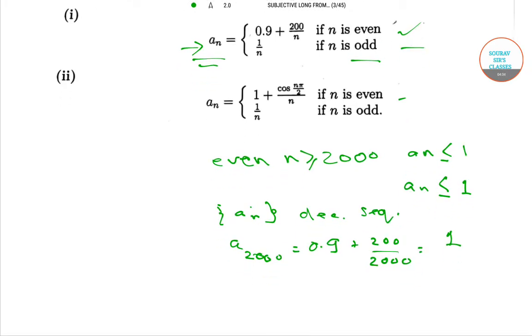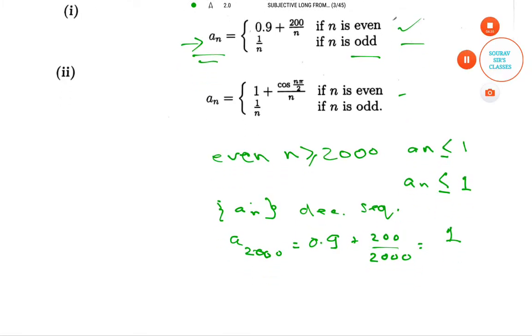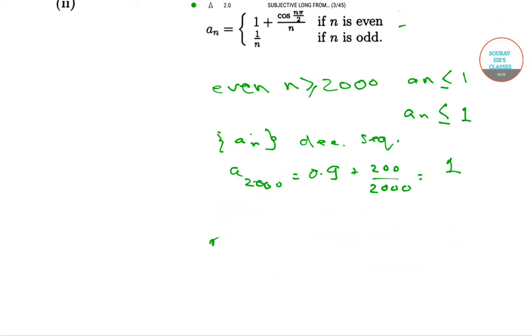Now, in our second sequence, let us consider N equals 4K, which is even. Then A_4K is equal to, from this, we have 1 plus cos 4K pi by 2 divided by 4K.